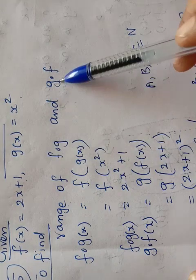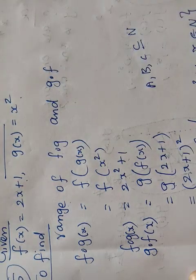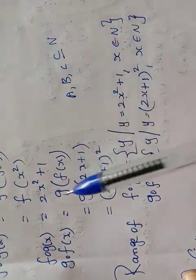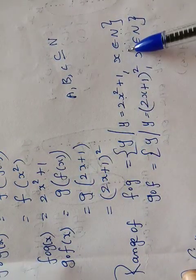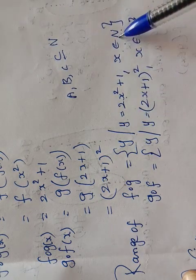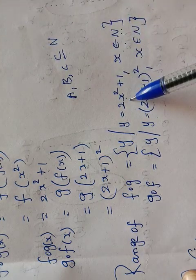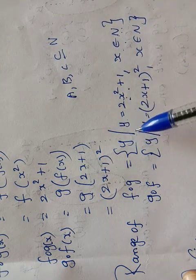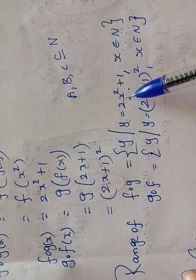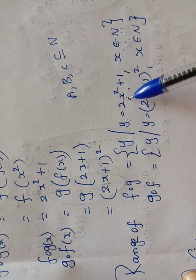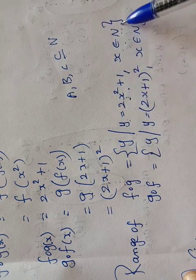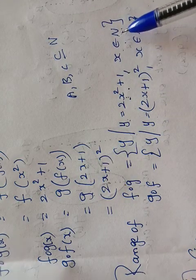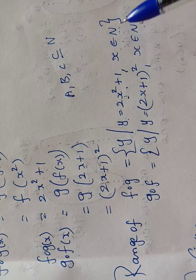They are asking for the range of f composite g and g composite f. Range means the values that come out. For different values substituted, you get different answers — that is the range. We write it generally as {y such that y equals the answer we got}. For f composite g, x belongs to N, and for g composite f also, x belongs to N, because the question gives that a, b, c are contained in N.